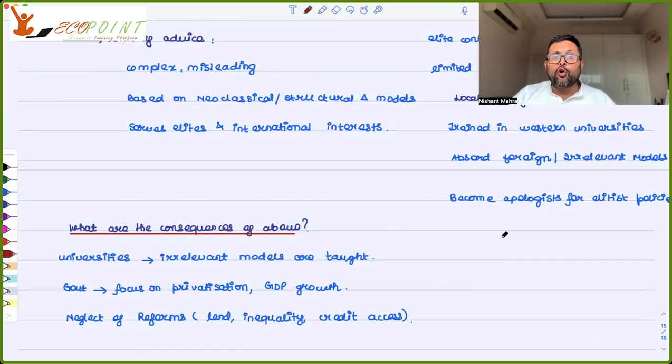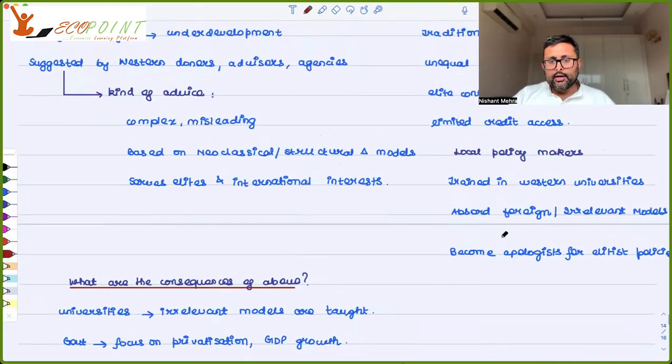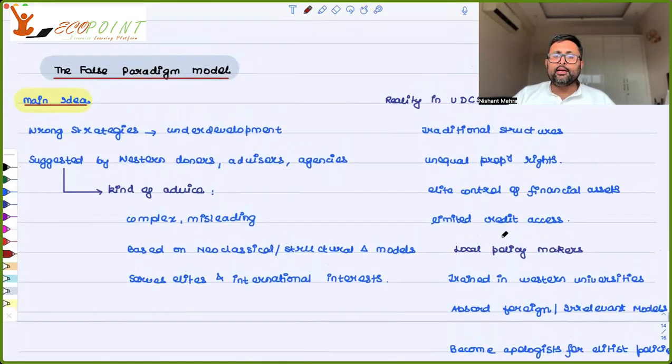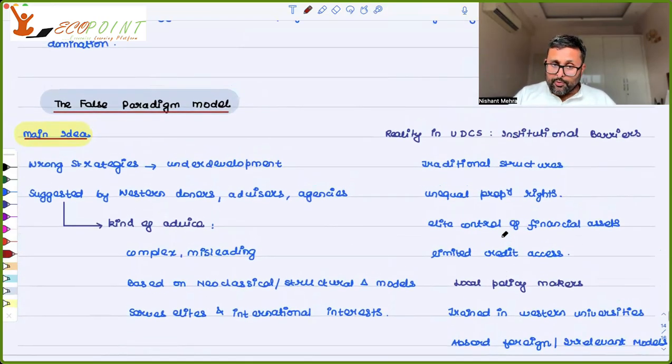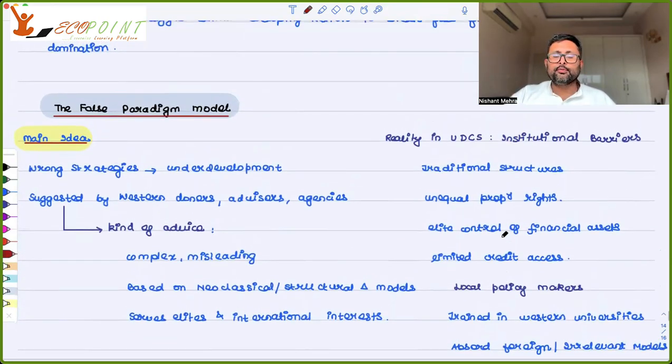So this is a false paradigm model. So this is what it is. So basically it is the wrong strategies which are leading to underdevelopment. This is what this model is trying to say. So please read from the book also and make proper notes. Thank you.